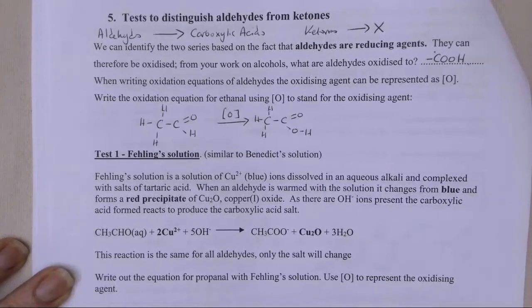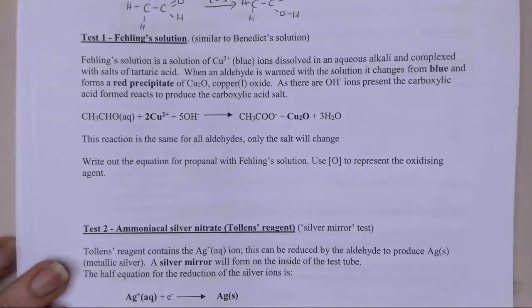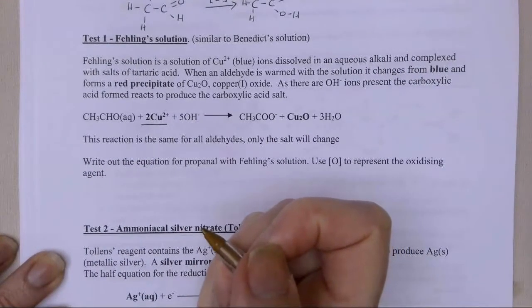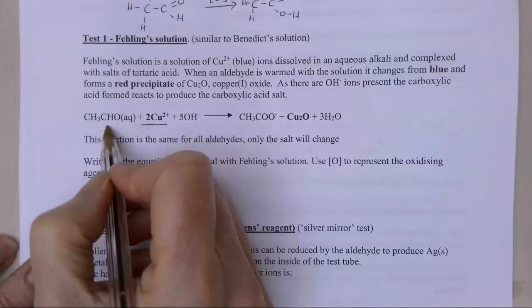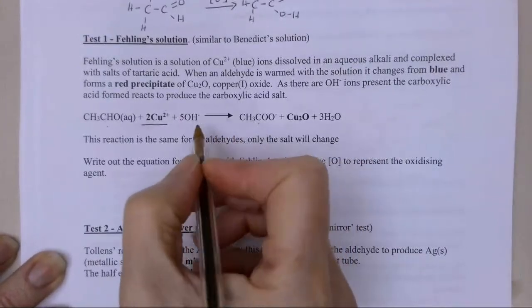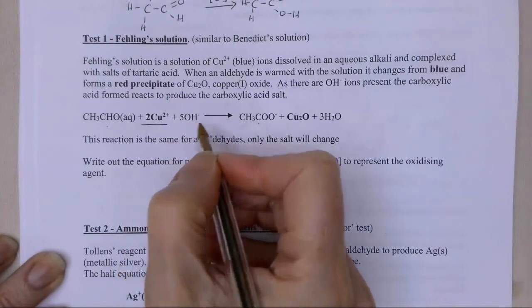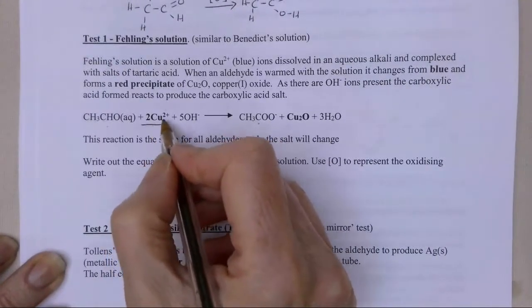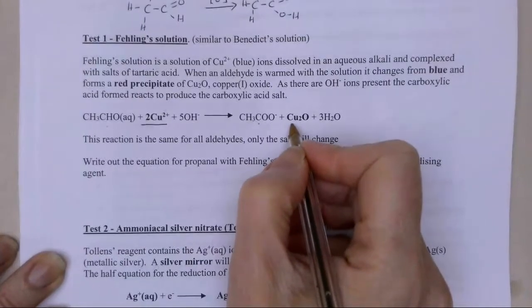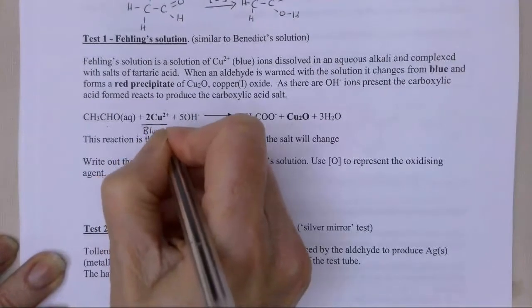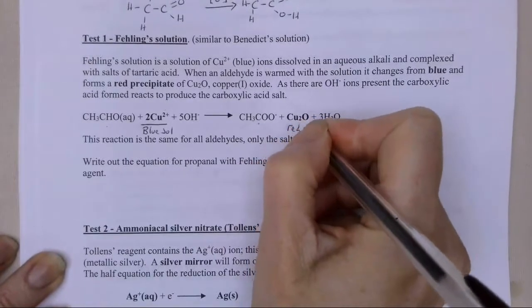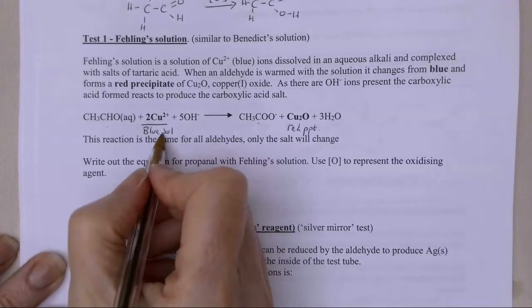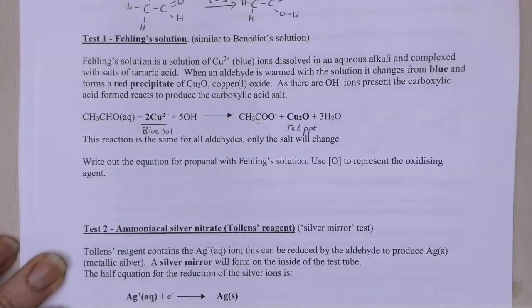The first oxidising agent we're going to look at is Fehling's solution. Those of you who do biology, this is very similar to Benedict's solution. Basically what I have in here is Cu²⁺, which is a relatively good oxidising agent, and it's going to oxidise my aldehyde to a carboxylic acid. It does this in an alkaline solution, which is why you end up with the salt here and not the free carboxylic acid. The copper goes from a +2 oxidation state down to its +1 oxidation state. So this is a blue solution, and this produces a red precipitate - that's how I know the reaction has happened.